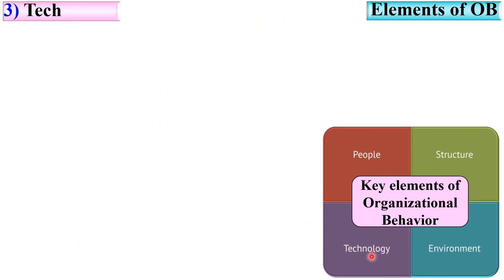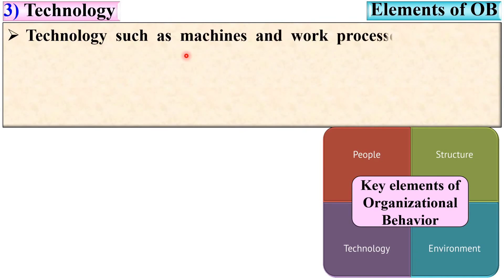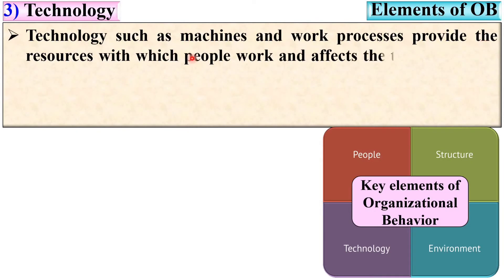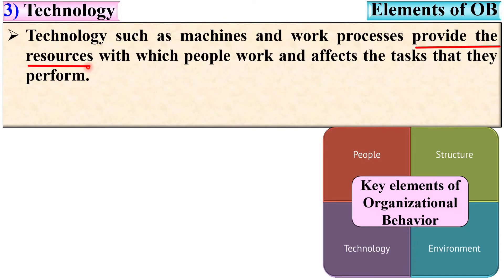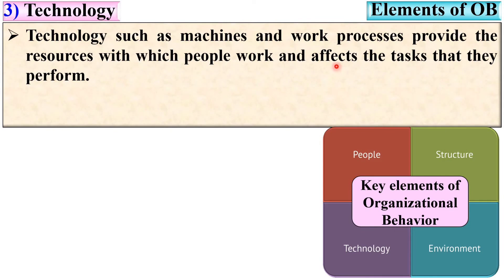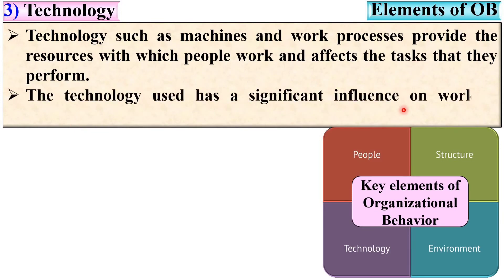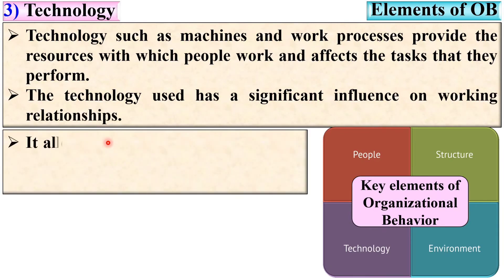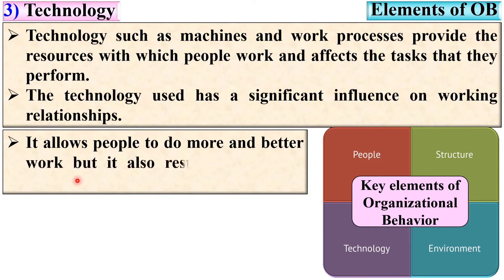The third key element is technology. Technology such as machines and work processes provides the resources with which people work and affects the tasks that they perform. If the technology is good, then people will perform tasks in the proper way. Technology has a significant influence on working relationships — it allows people to do more and better work, but it also restricts people in various ways.